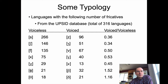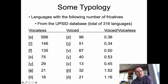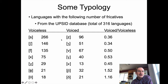This is from the UPSID database, which looked at 316 different languages. Generally speaking, more languages are going to have the voiceless counterpart of a fricative at any particular place of articulation. At the alveolar place of articulation, which is the most common place for fricatives, we get 266 languages with S and 96 languages with Z. So that's a ratio of about one out of three — every language that has a voiceless fricative has a voiced fricative at that place of articulation.